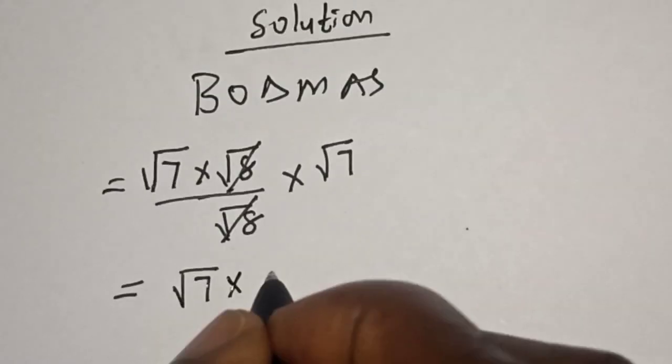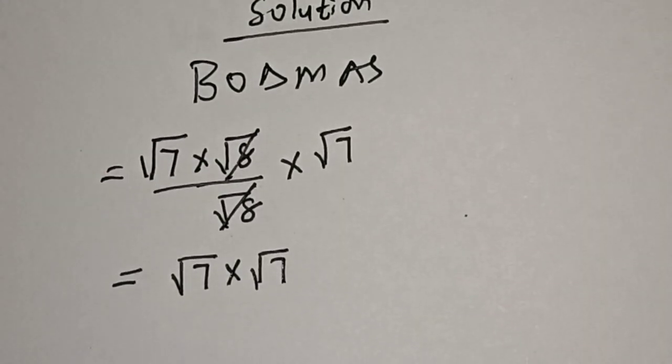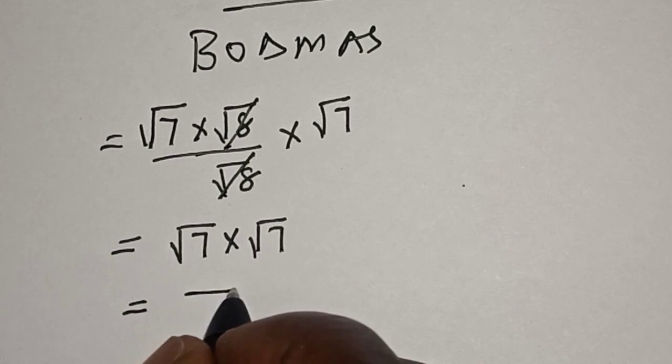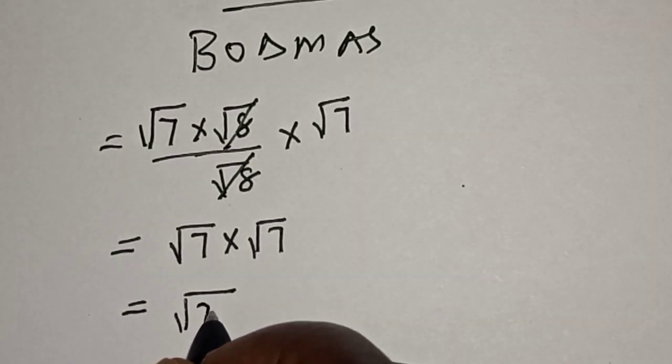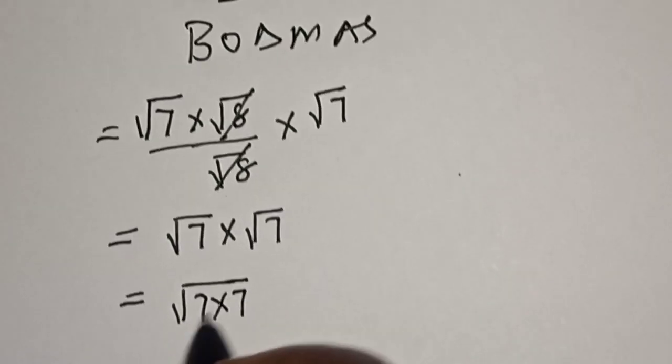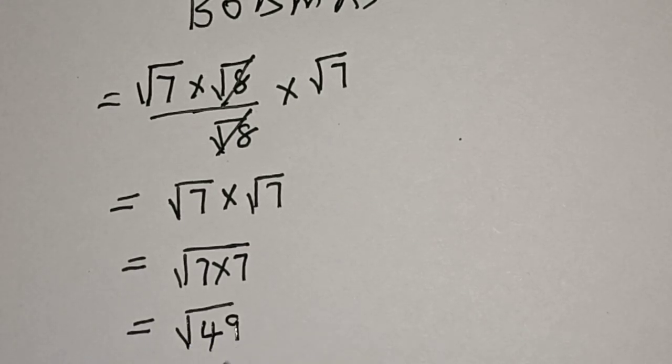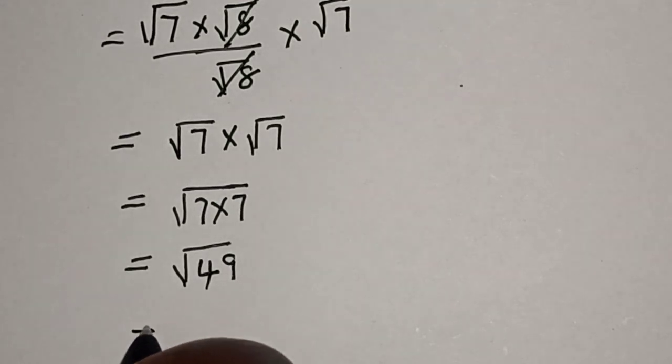Square root of seven times square root of seven is equal to square root of seven times seven, which is equal to square root of 49. Square root of 49 is seven.